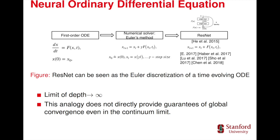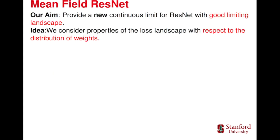In this work, we propose a new continuum limit of deep residual networks, which enjoys a good landscape in the sense that every local minimizer is global.